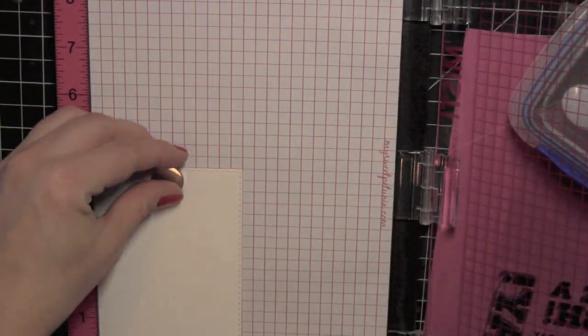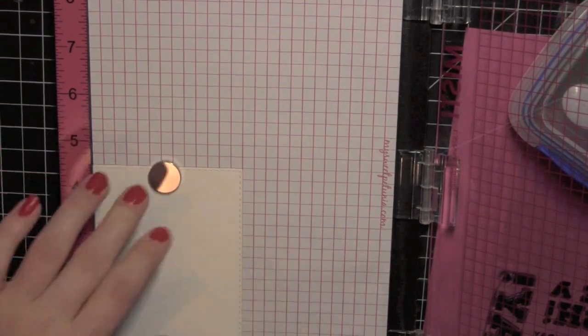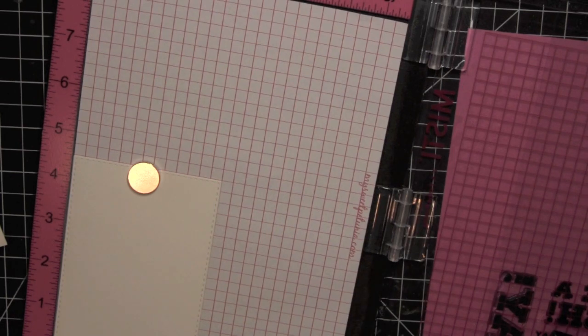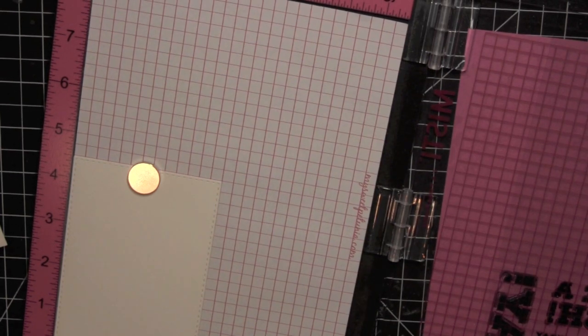I'm just going to show how I laid my stamps out where I wanted them to go. Once I had them in place I closed the tool, it picks up the stamps, and I'm going to ink them up with some Versamark ink.